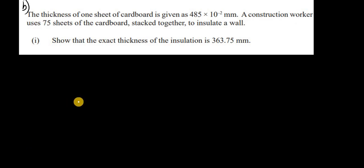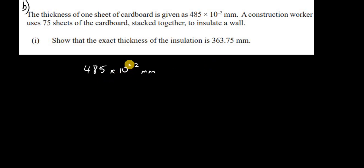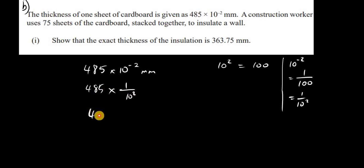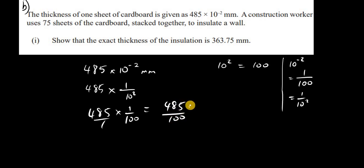The thickness of one sheet of cardboard is 485 times 10 to the negative 2 millimeters. Let's write it as an ordinary number. You know that 10 to the positive 2 is 100, so 10 to the negative 2 is really 1 over 100. So what we have is 485 times 1 over 100, which is 485 over 100. Dividing by 100 moves the decimal point 2 places to the left, giving 4.85.